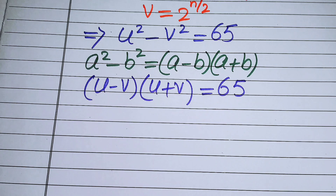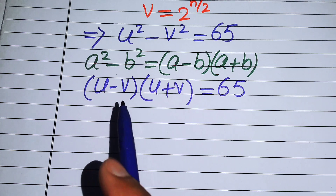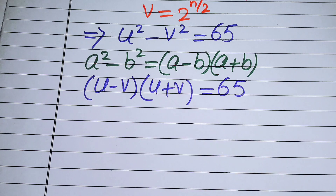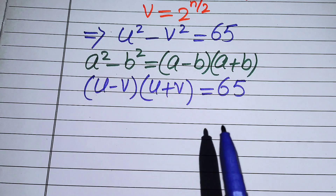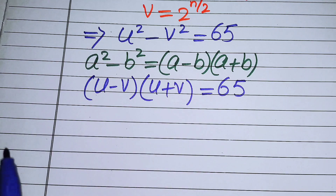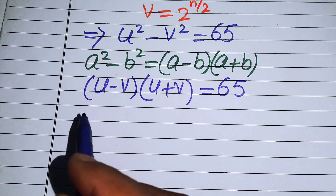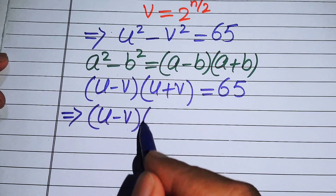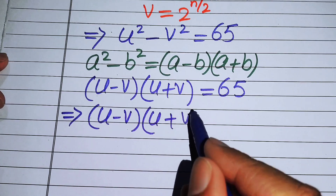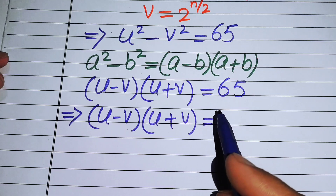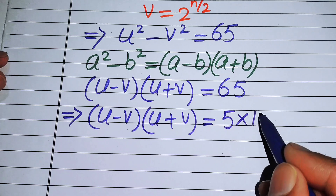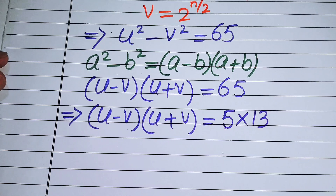On the left-hand side we have two factors, u minus v and u plus v, while on the right-hand side we have the single value 65. We need to make two factors on the right-hand side, so we write 65 as 5 times 13.